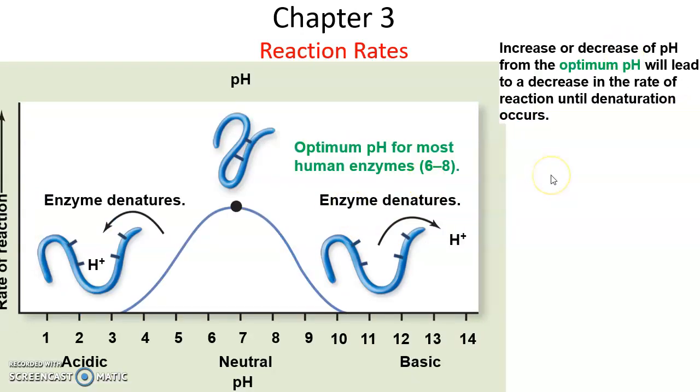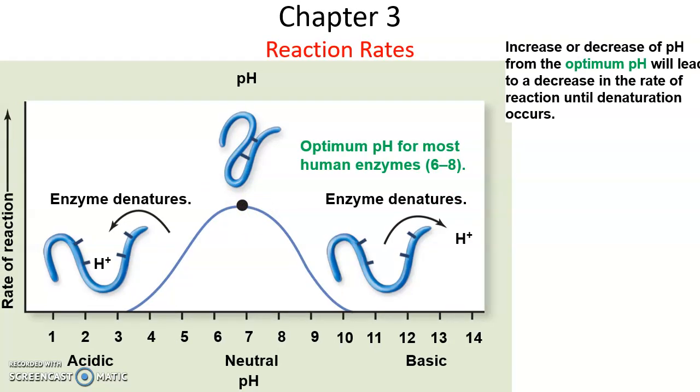pH works a lot like temperature. You have an optimal pH for any particular enzyme. If you increase the pH past the optimal rate and keep increasing it, the reaction rate will decrease until finally you denature the enzyme. Or if you go the other way, you keep decreasing the pH, making it more acidic, that will slow down the reaction rate until finally you denature the enzyme because it's too acidic. pH extremes denature the enzyme. You want to function at the optimal pH. That's the optimal, fastest reaction rate.